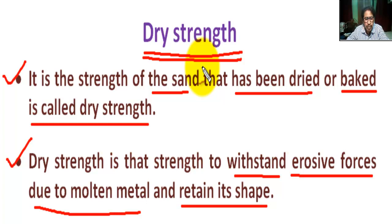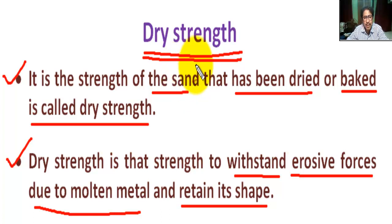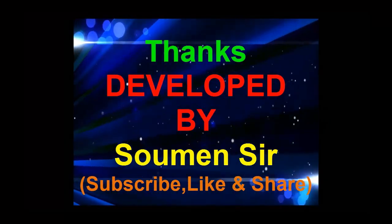When the molten metal is poured, the sand adjacent to the hot metal quickly loses its water as steam. Dry strength is related to grain size, binders, and moisture content. It is clear, students. Thank you.